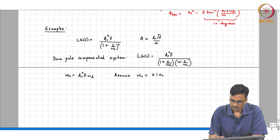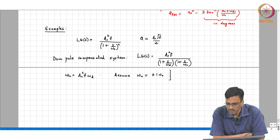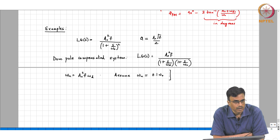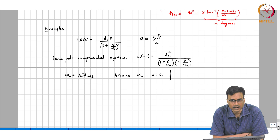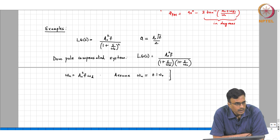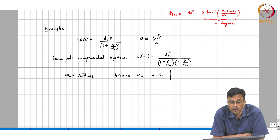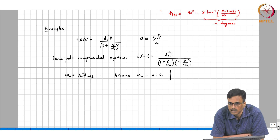Let us first check the assumption that omega_naught does not result in any appreciable magnitude response at the unity gain frequency. What is the magnitude response of 1/(1 + s/omega_naught) at one-tenth the frequency? It is 1 / sqrt(1 + 0.01). sqrt(1.01) ≈ 1.005, so 1/1.005 ≈ 0.995 — the magnitude at one-tenth of omega_naught.